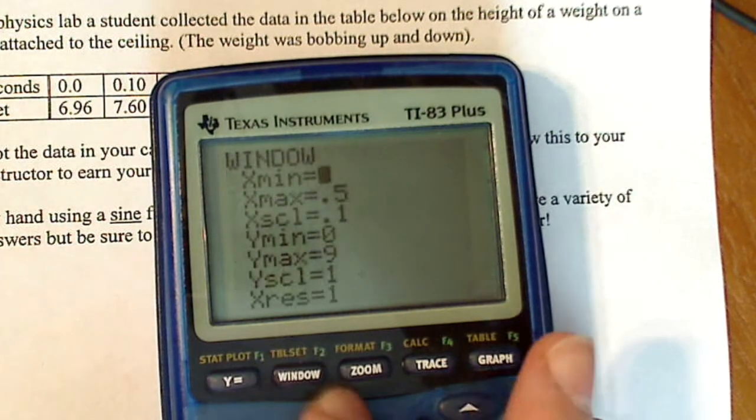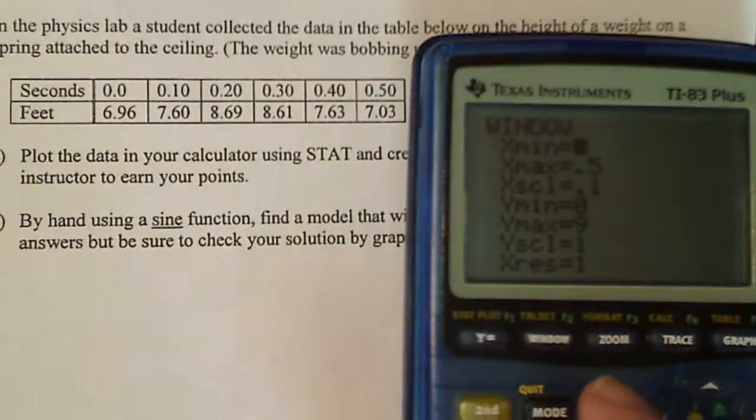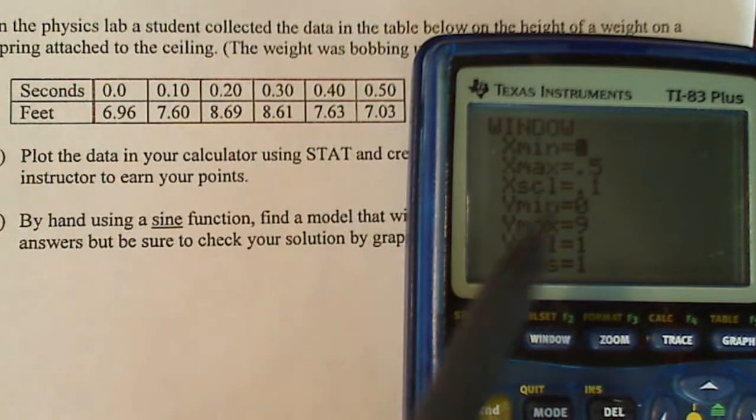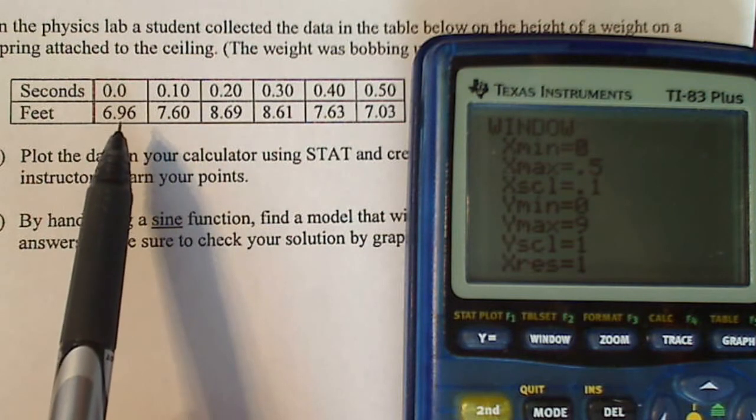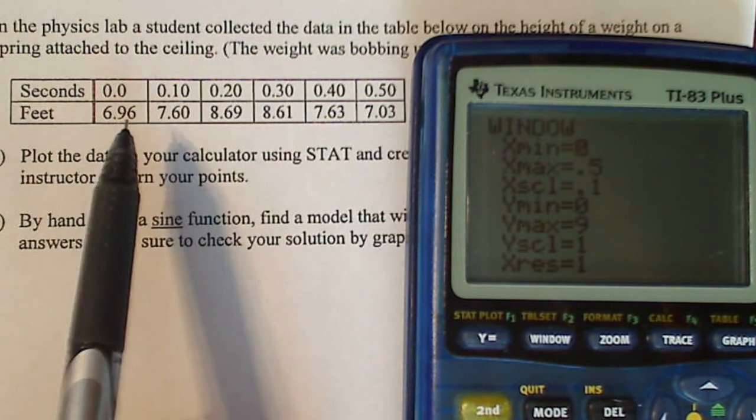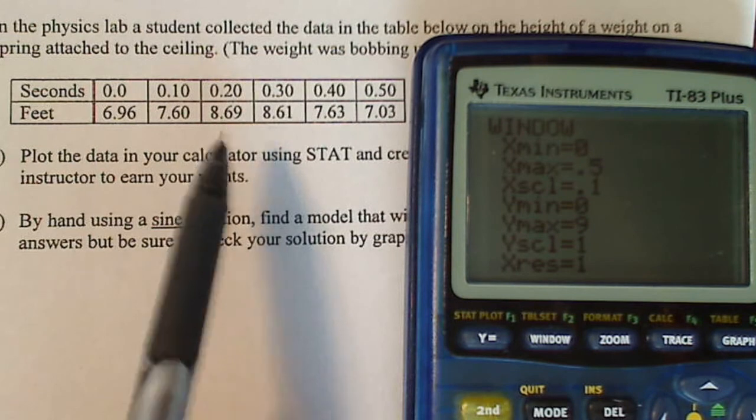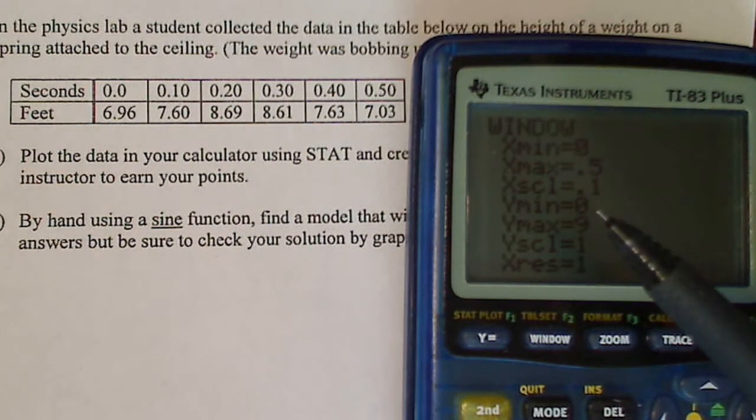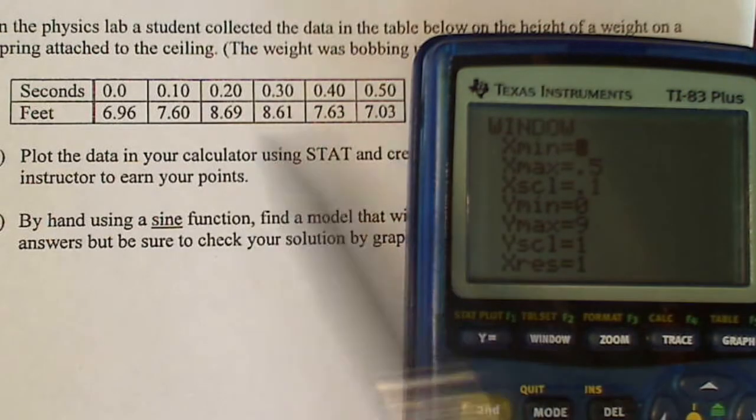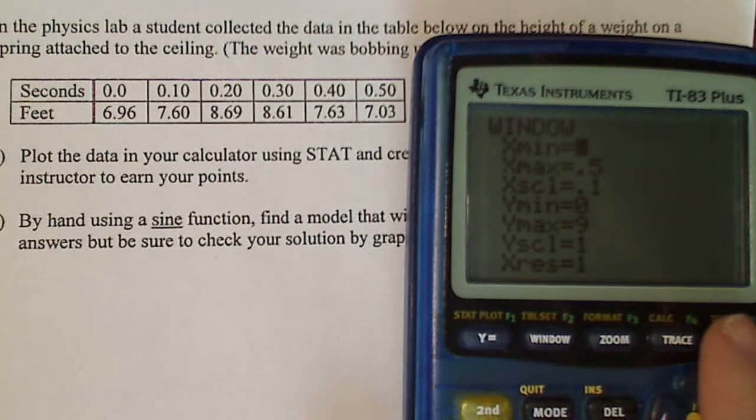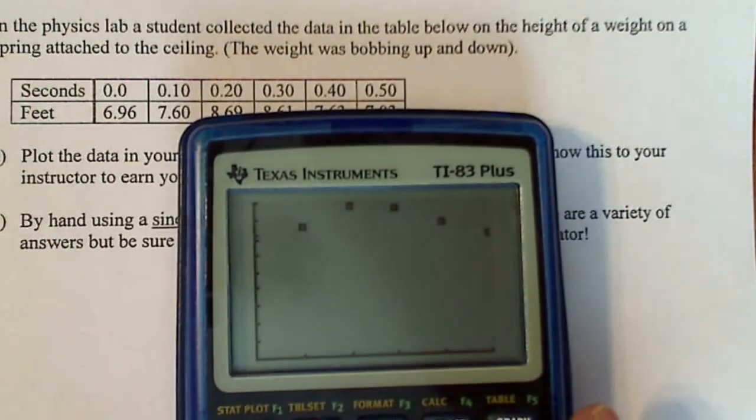Now, if you want to plot it, make sure your window is right. Notice that my x goes from 0 to 0.5. So this goes from 0 to 0.5. This has a low value of 6.96 and a high value of 8.69. So I like to see the axis. So I always start at 0 or have 0 in my y min and max. But I'm going to go with maximum of 9, which is just greater than this. Now, you should be able just to graph it. And there's your plot. There's your data plot.